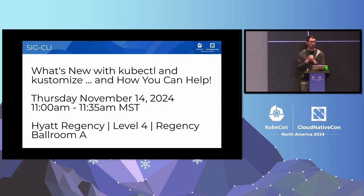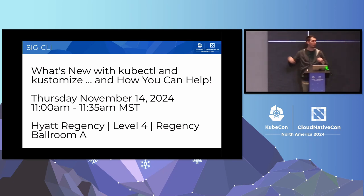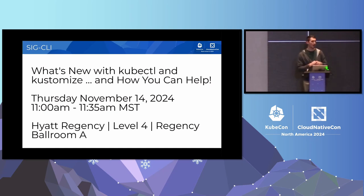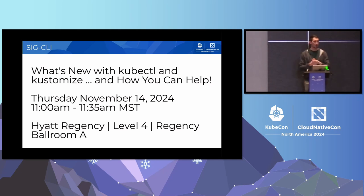To learn more, you can join our talk on Thursday at 11 a.m. in Ballroom A. SIG CLI has meetings every other Wednesday at 9 a.m. Pacific time. You can find us on the Kubernetes community GitHub to find our meeting link and agenda — it's free and open, you don't have to register, you can just show up and say hi. We're also doing a meet-the-SIG session where you can come and meet all the other contributors. Thank you all, and thanks for using kubectl.